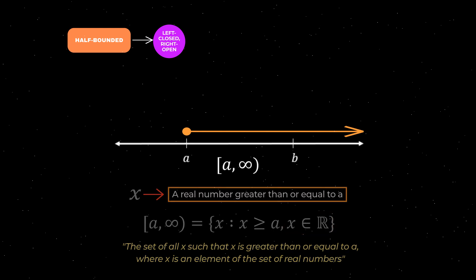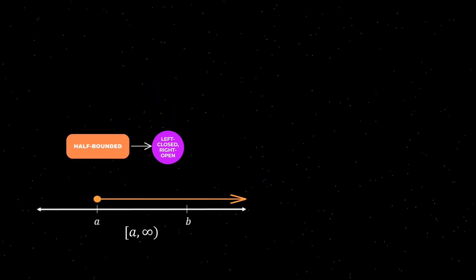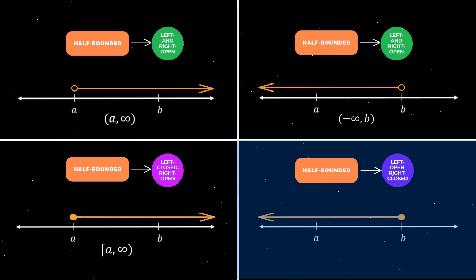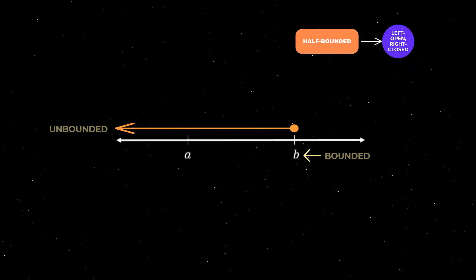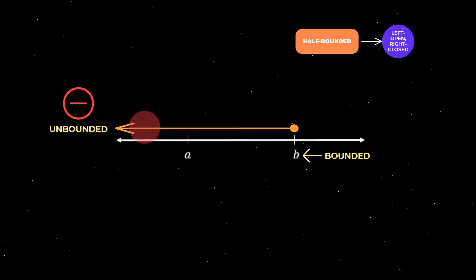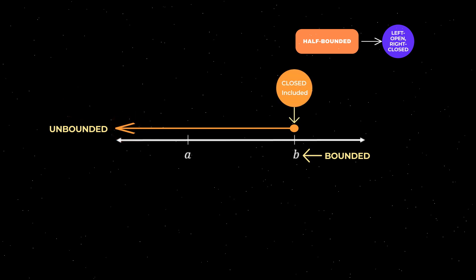Let's now look at a half bounded interval that is left open right closed. A general example of this type of interval is shown on the number line here. This interval is half bounded because it has one endpoint on one side — in this case the right endpoint B — and no endpoint on the other side, as indicated by the arrow. On the left, the interval is open because the real numbers go on forever, in this case in the negative direction of the number line. In contrast, on the right, the interval is closed because the endpoint B is included, as indicated by the closed circle.